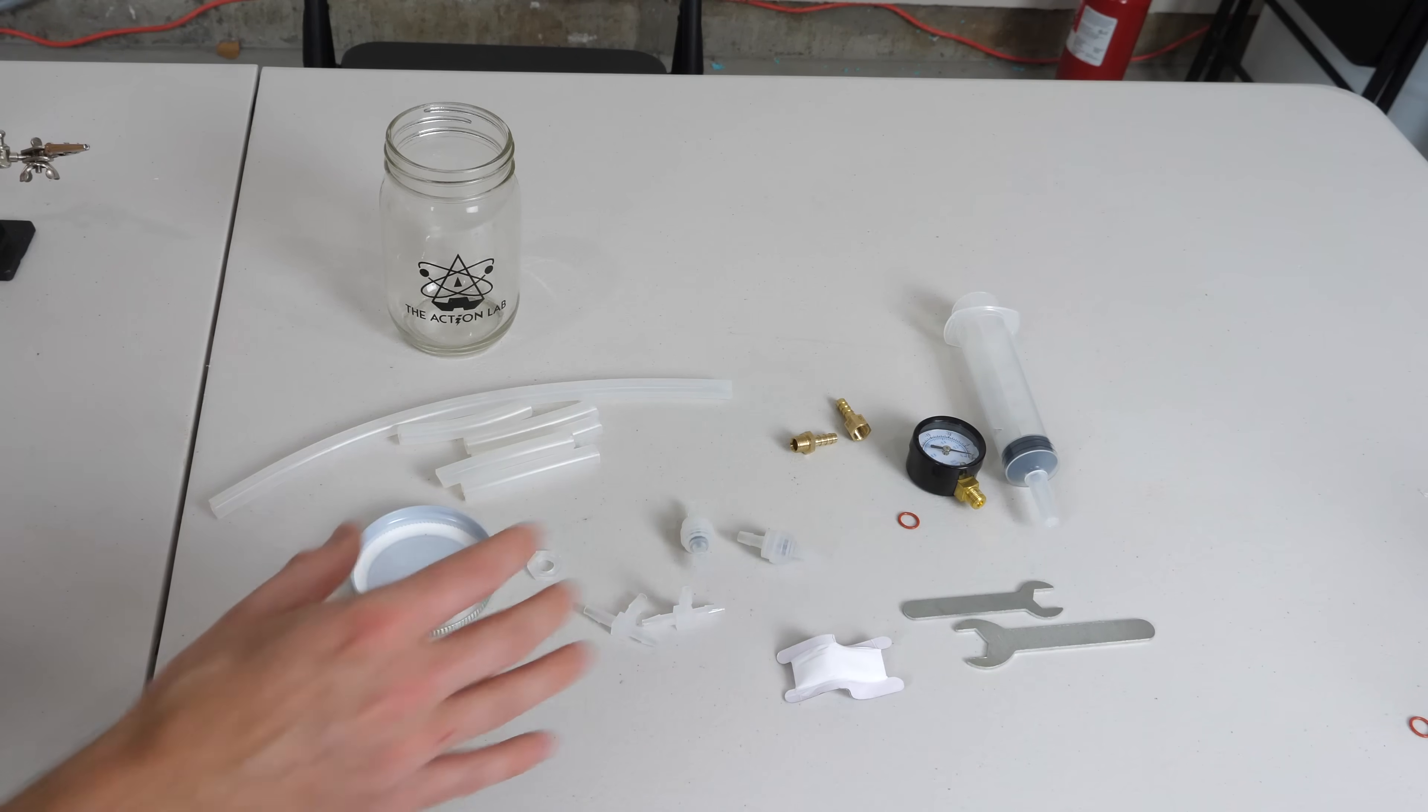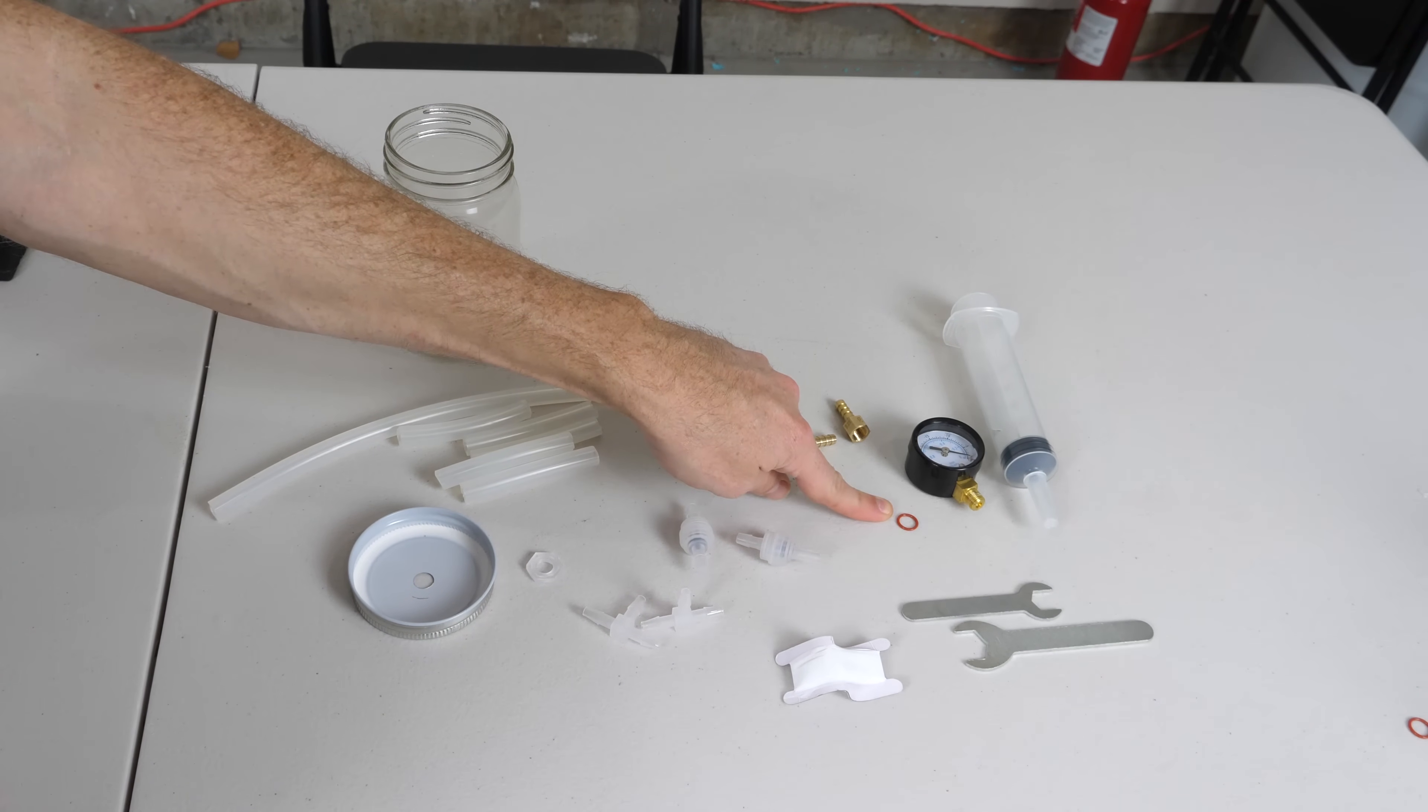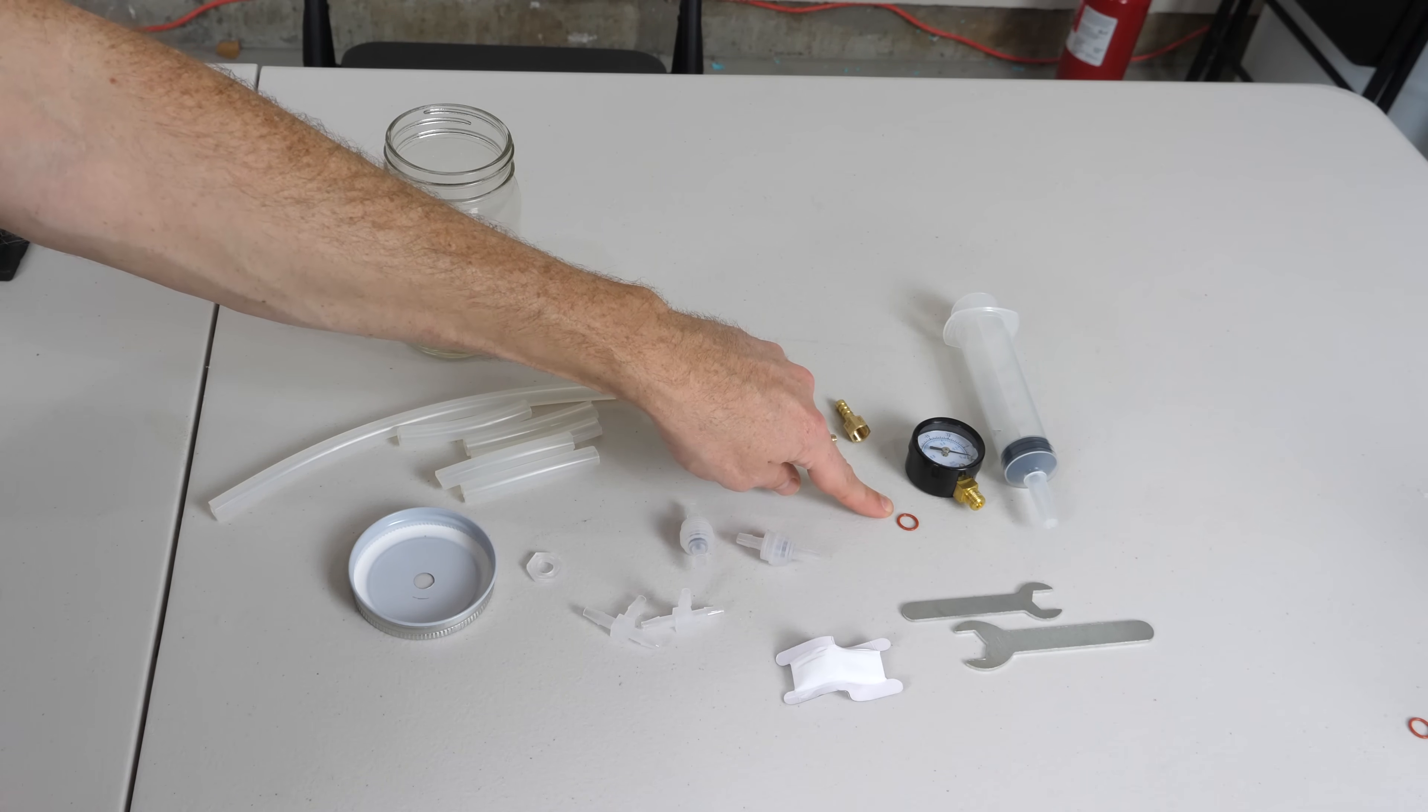So here are all the pieces that come in your vacuum chamber kit. You might have received two of these O-rings. If you did, just know that you only need one of them.